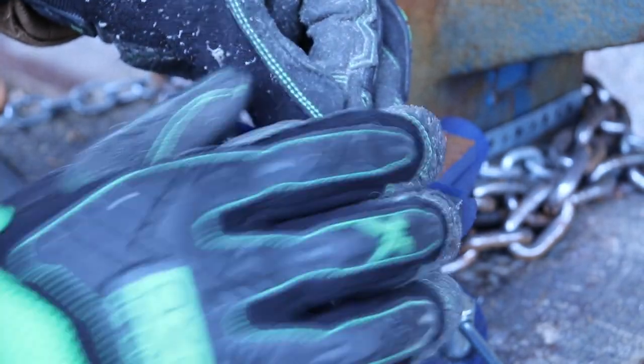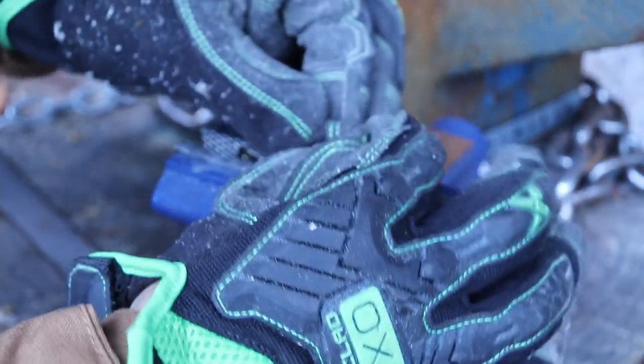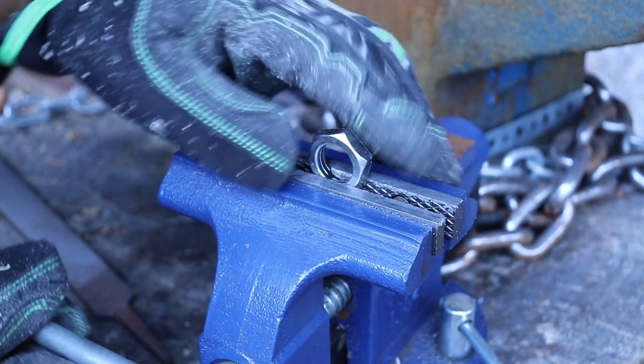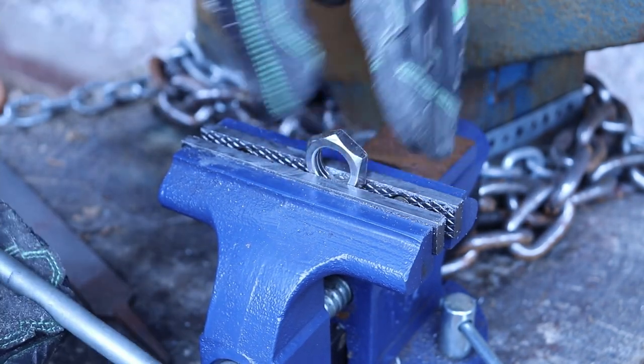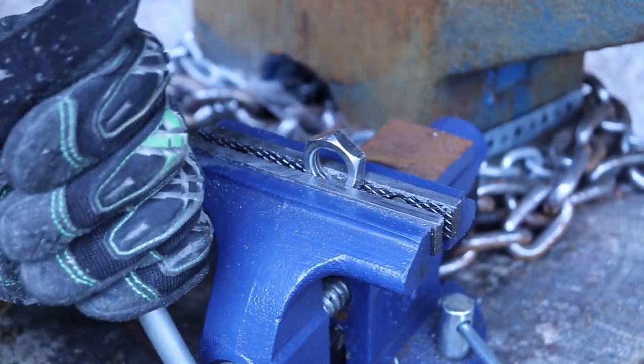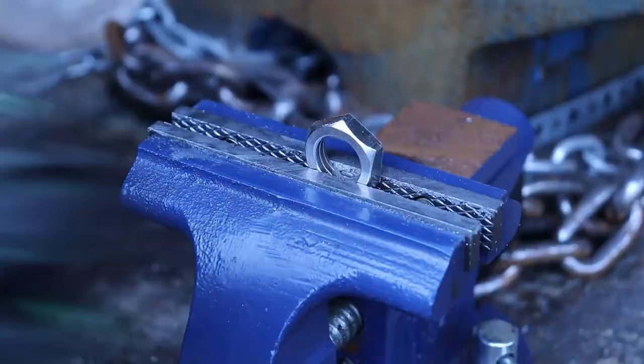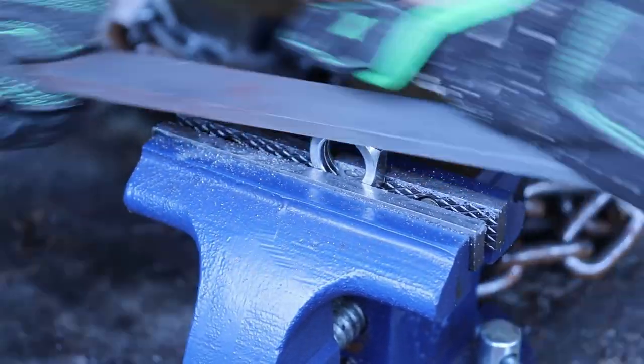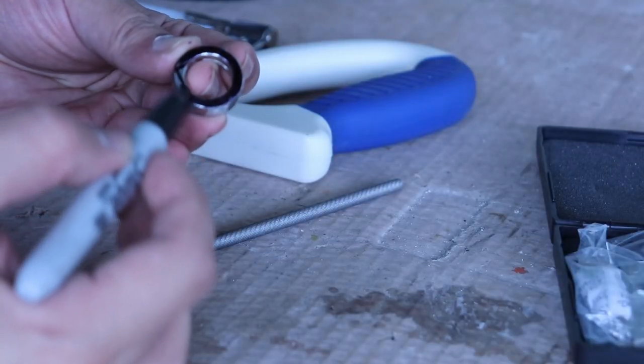Keep in mind you always want to constantly check that inner diameter size when you're filing it down because once you overshoot it becomes too loose and you have to restart. Once you've achieved the proper inner diameter it's time to file down the outer diameter. Firstly we gotta file down the corners of the nut, once that's done we determine the outer diameter.